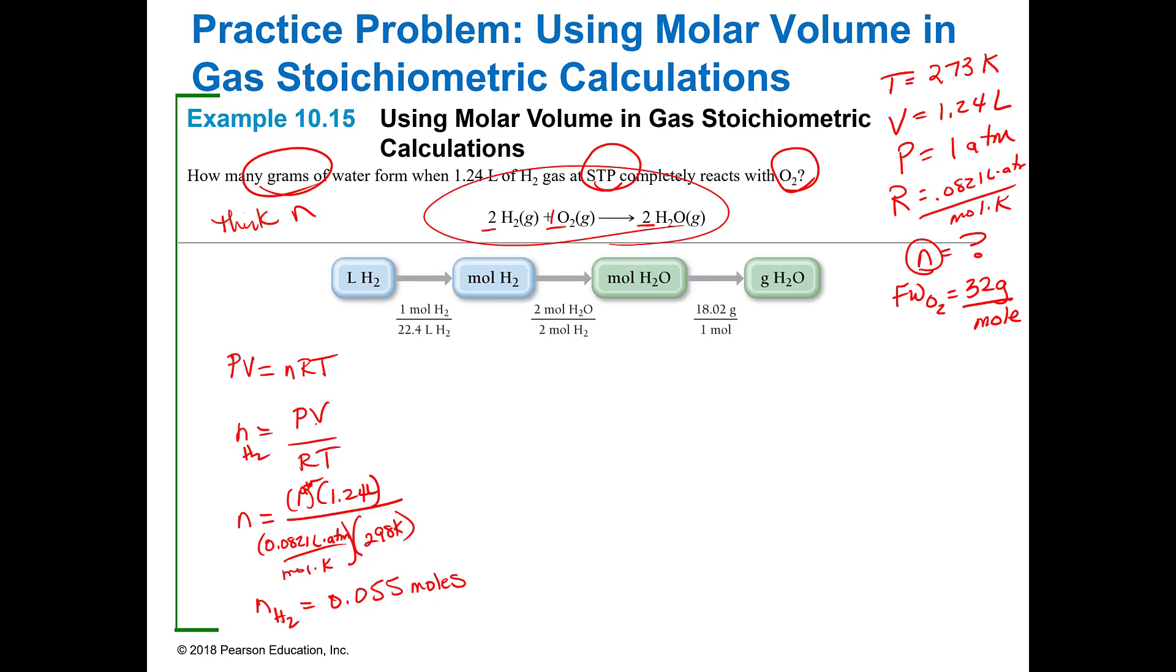If hydrogen is 0.055 moles, I'm wanting to know how many grams of water. I've got to do my molar ratio. In this particular case it's 2 moles of hydrogen to 2 moles of water. So I'm actually going to end up with the same number of moles of H2O. Then I can say 1 mole of water is 16 plus 2 is 18, so 18 grams per mole. That's going to give me 0.99 grams of water.